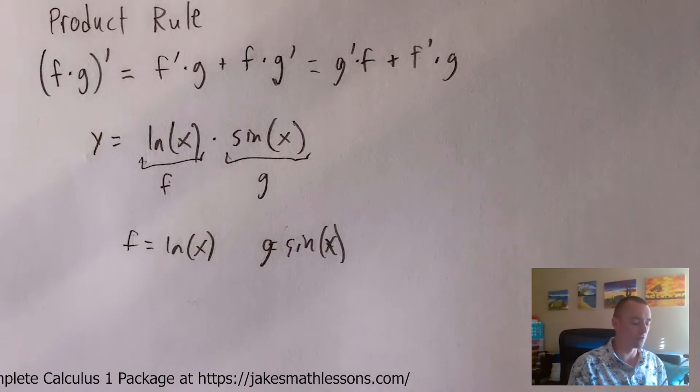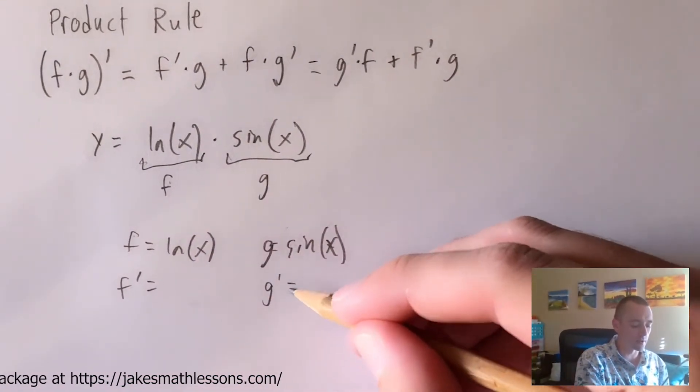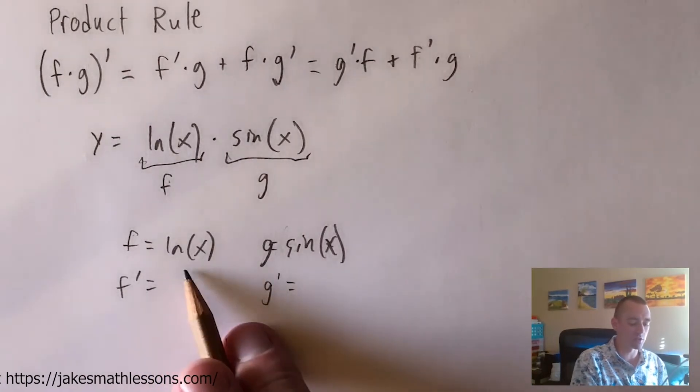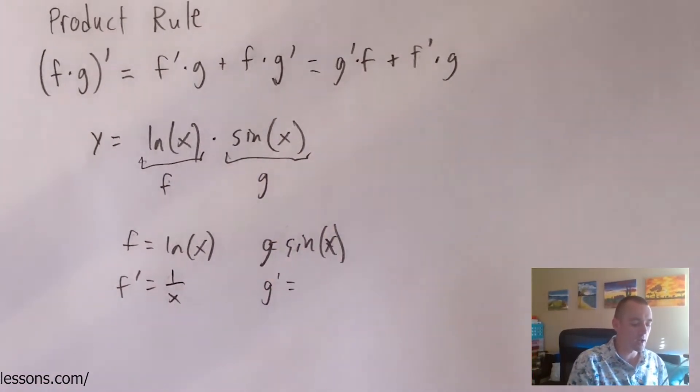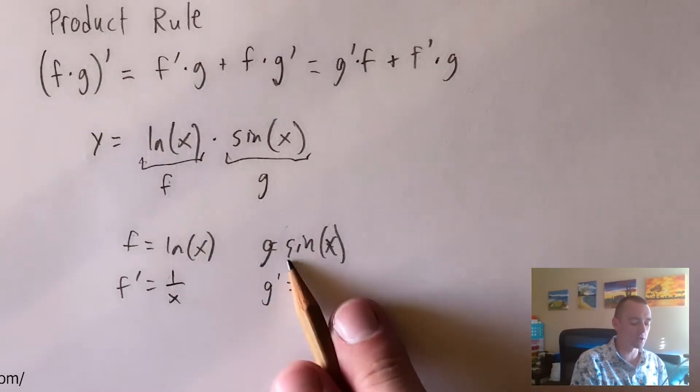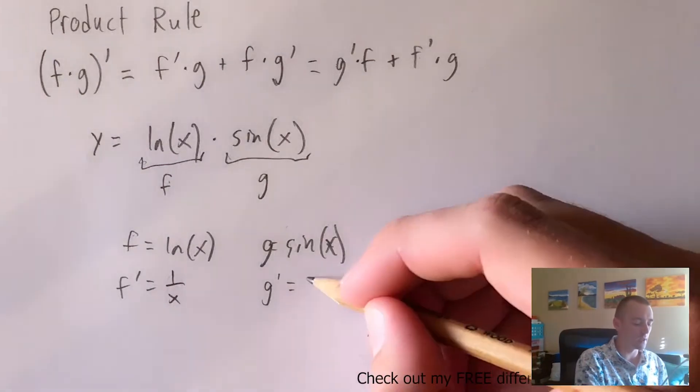Then what you need to do is find the derivative of each of these smaller pieces on their own. So basically, we're just going to find f prime, which is just the derivative of natural log x, which is one over x. And then we need to find g prime, which is just the derivative of g, which is sine x. The derivative of sine of x is cosine x.